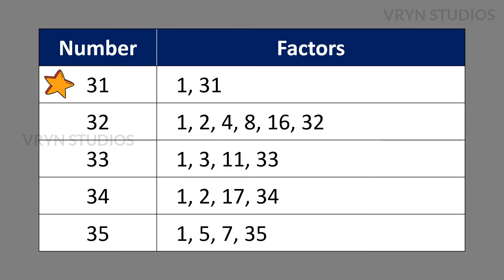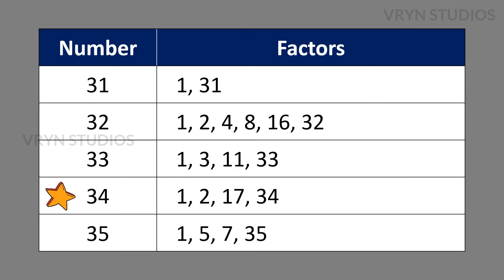The factors for the number 31 is 1 and 31. The factors for the number 32 is 1, 2, 4, 8, 16 and 32. The factors for the number 33 is 1, 3, 11 and 33. The factors for the number 34 is 1, 2, 17 and 34. The factors for the number 35 is 1, 5, 7 and 35.